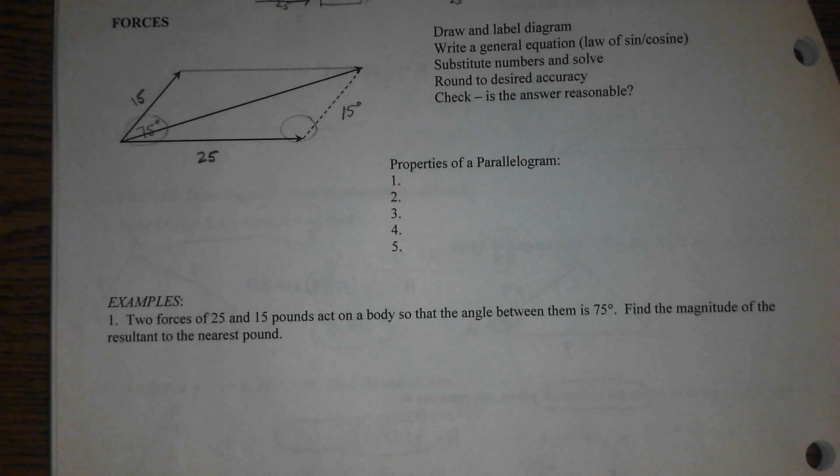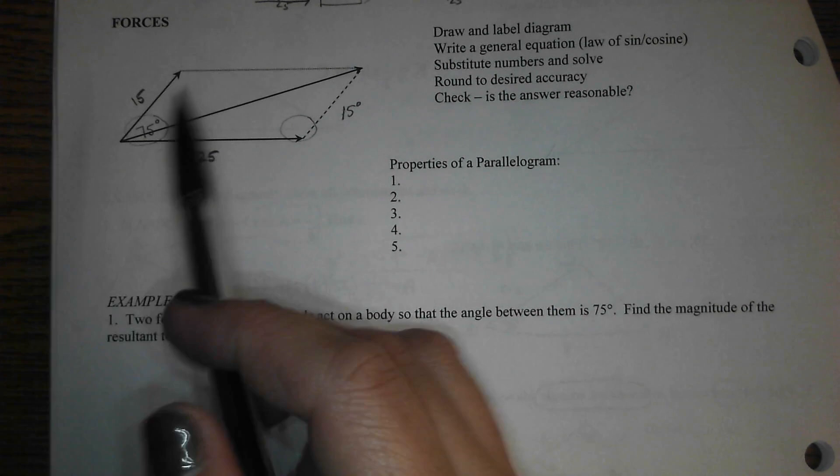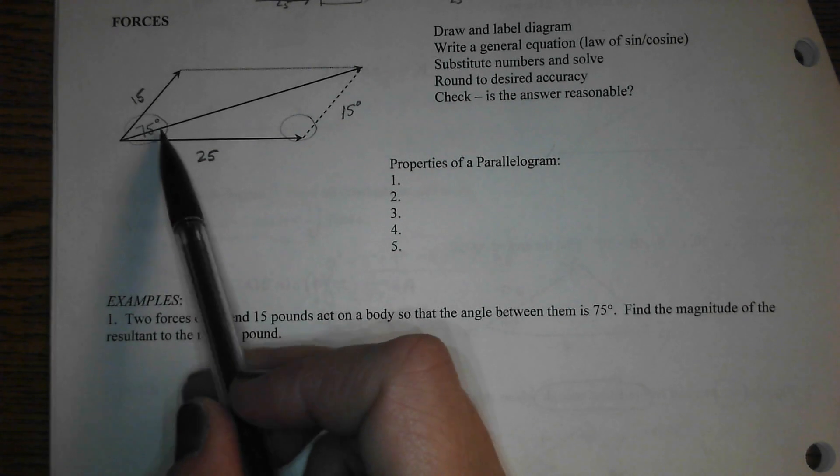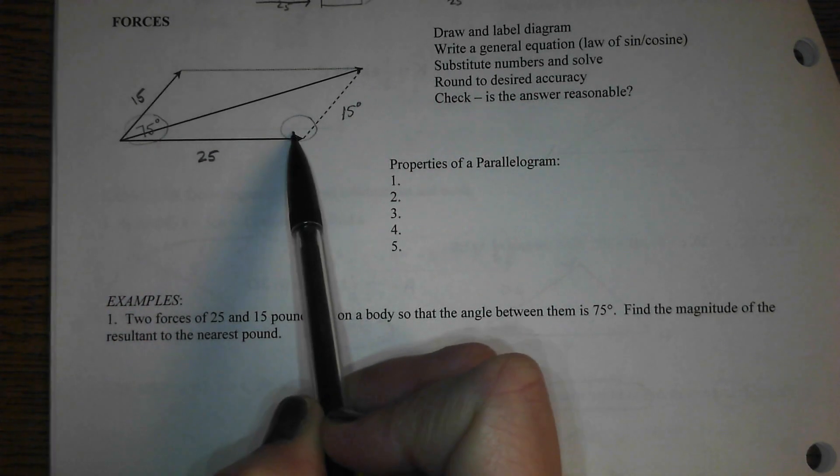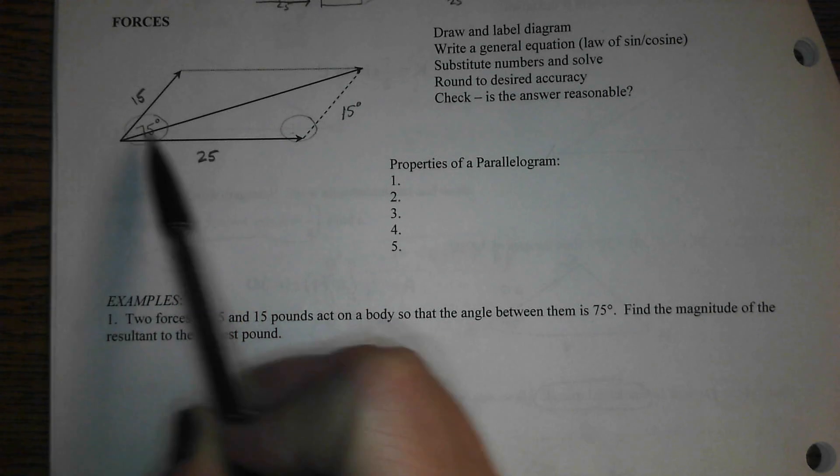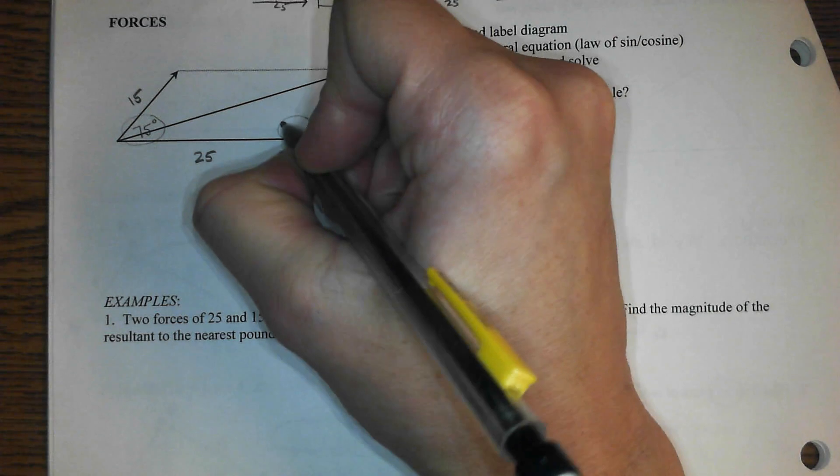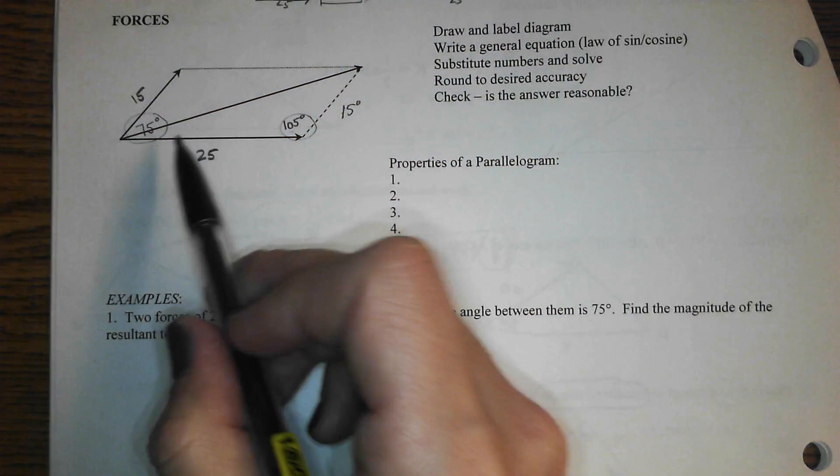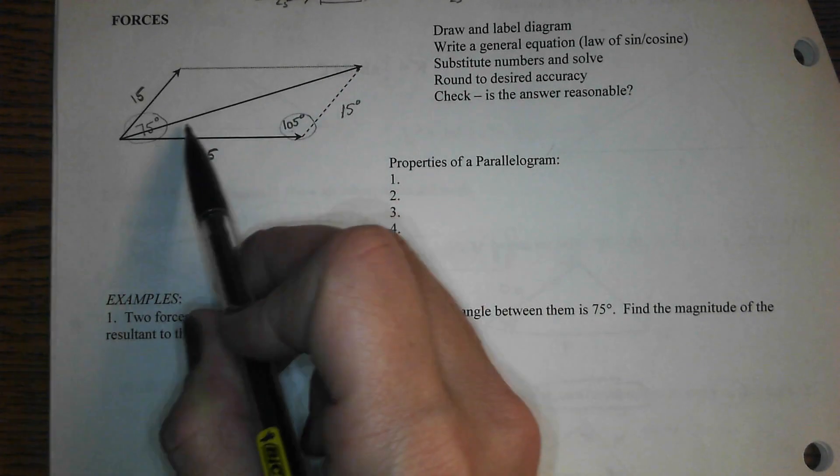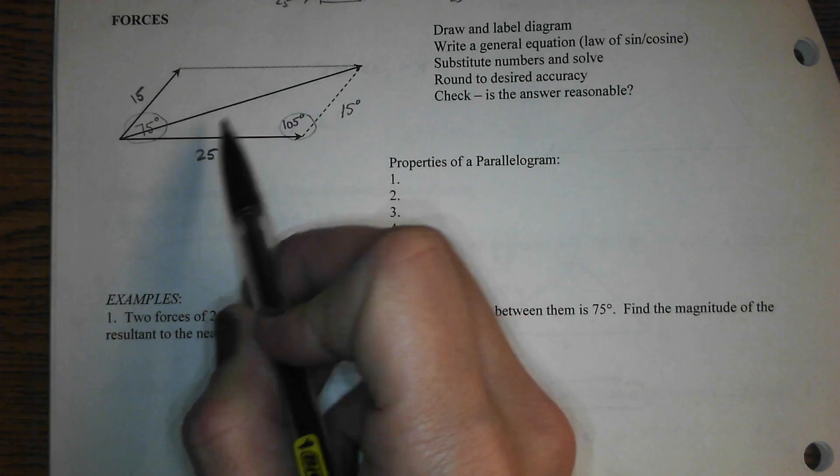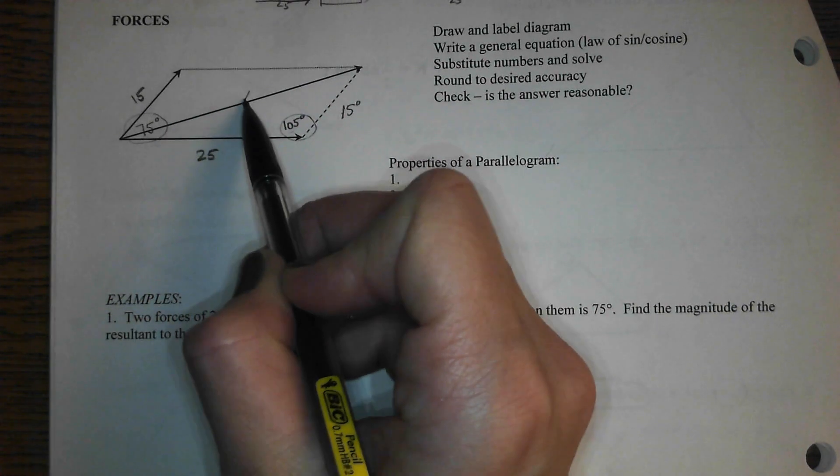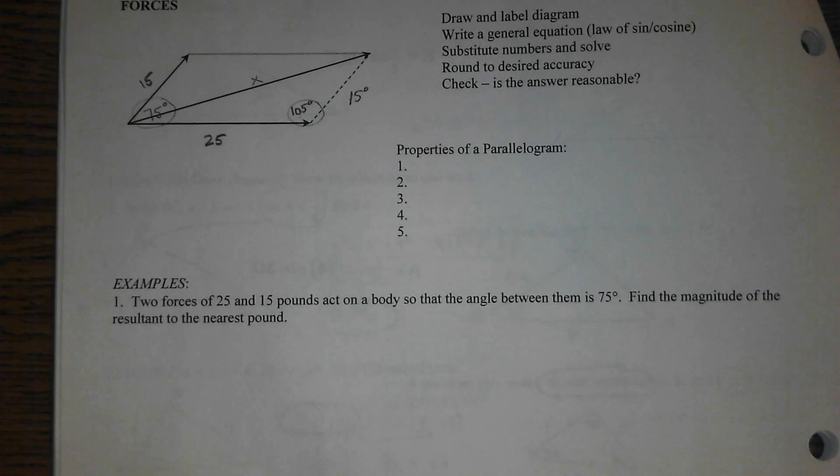No. Consecutive angles are supplements. So if this is 75, that's right there on parallelograms. If this is 75, this has to be 105 because they have to add up to 180. So what that does for us is it gets us all within one triangle. Yes. And I can find the size of that force.